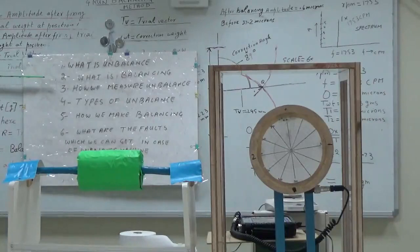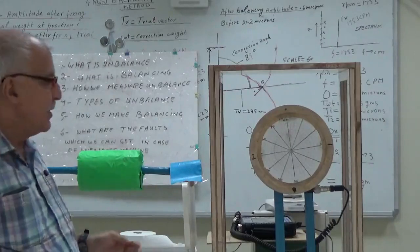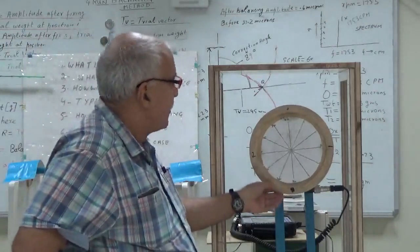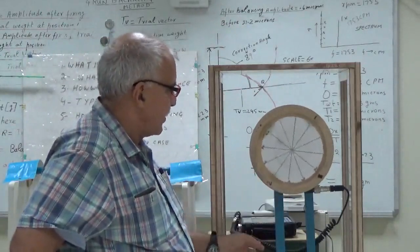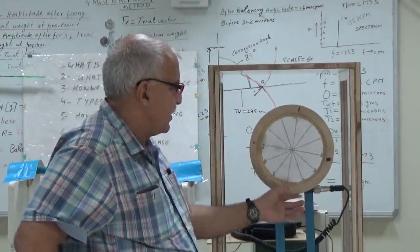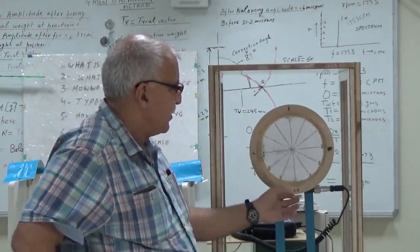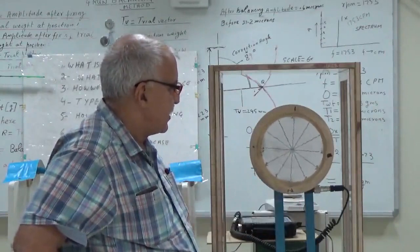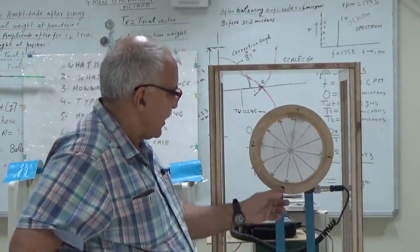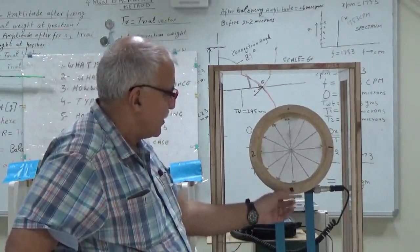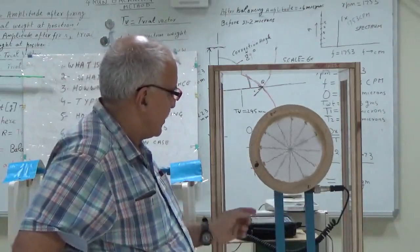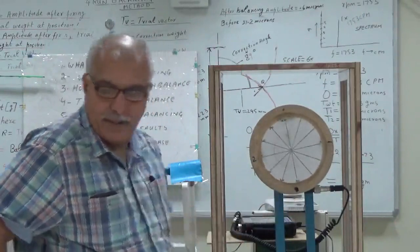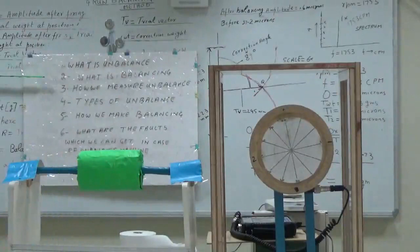Let us discuss number one: what is unbalance? Unbalance means that there is more weight on one side of the rotor. As you can see here, when I change the position of this disc, the heavy side is coming down. You can see this mark here — now the mark is coming down.